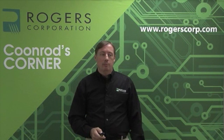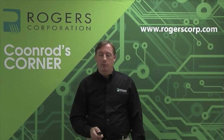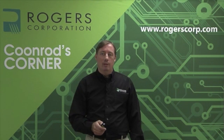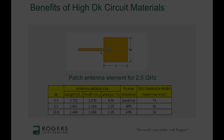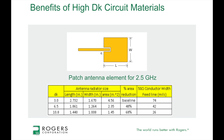In the microwave industry there are many different circuit types — some a quarter wavelength, some half wavelength, depending on the design. Another common circuit is the microstrip patch antenna. What I've shown on screen is a simple patch element. When you design this patch antenna at 2.5 gigahertz, you get about a 48 percent size reduction going from a dielectric constant of 3 to 6.5, and about 68 percent reduction going all the way up to 10.8.